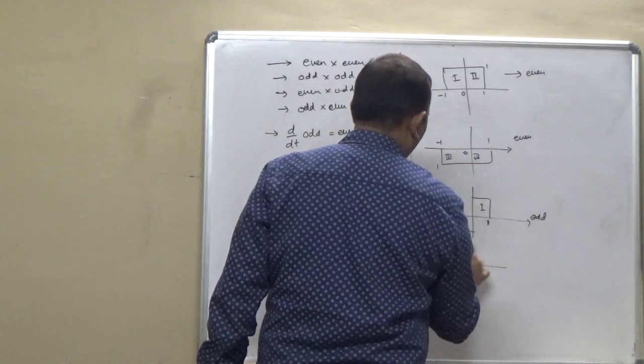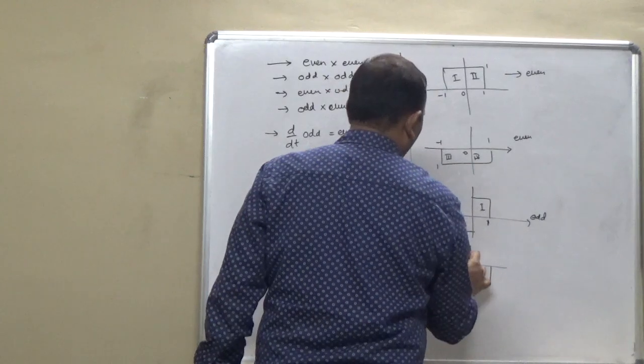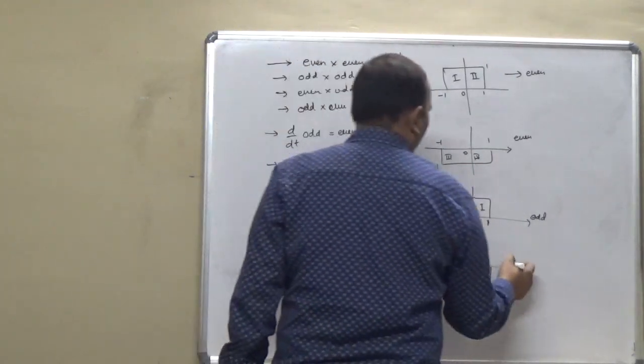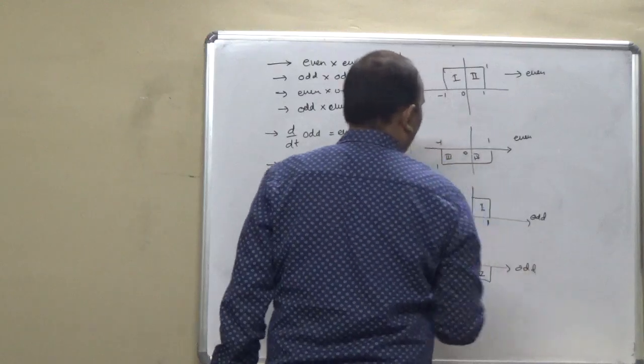Similarly, if it lies in the second and fourth, that is an anti-symmetric, then it is also an odd signal.